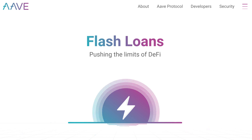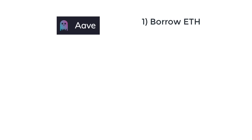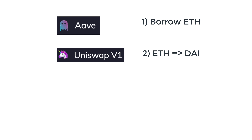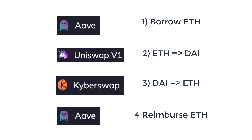The basic idea with arbitrage is to buy low and sell high. You find an ERC20 token that has a lower price on exchange A and a higher price on exchange B, then you buy the token from exchange A and sell it on exchange B. For our example, we will assume there is a discrepancy in the price of DAI — DAI is cheaper on Uniswap compared to Kyber. So our plan is to borrow Ether with the flash loan, buy DAI on Uniswap with the borrowed ETH, sell DAI on Kyber to get our initial ETH plus some profit, and finally reimburse the loan with the ETH we got back from Kyber.